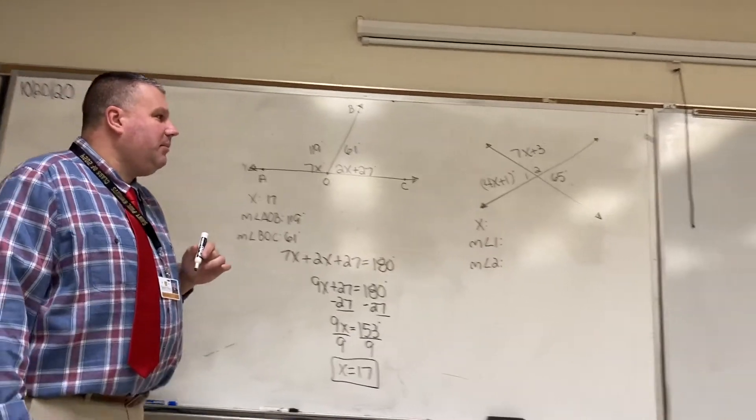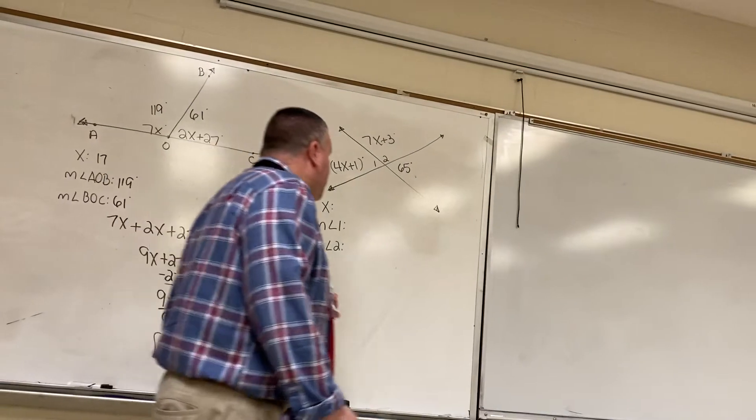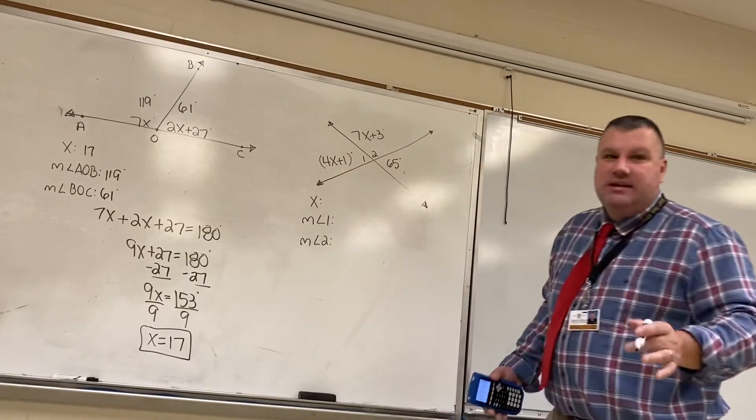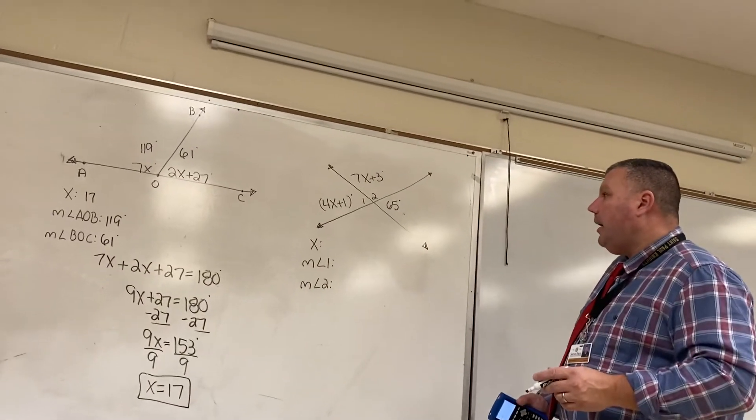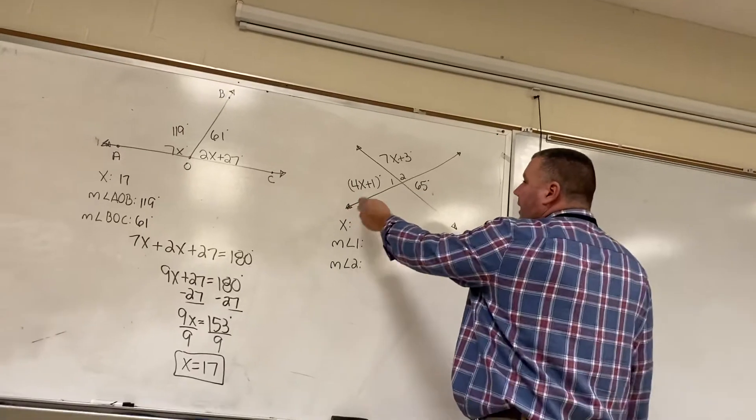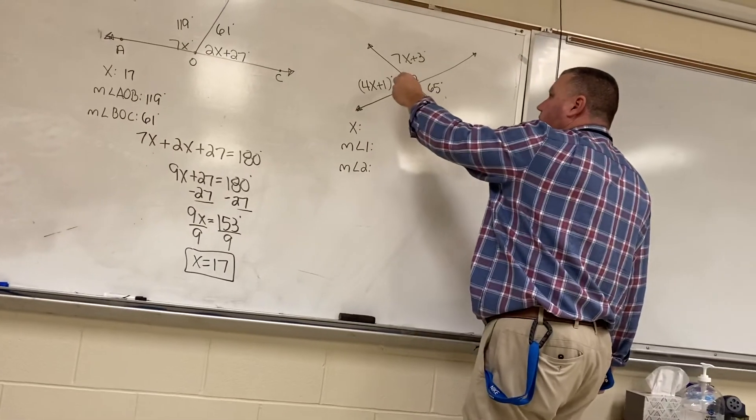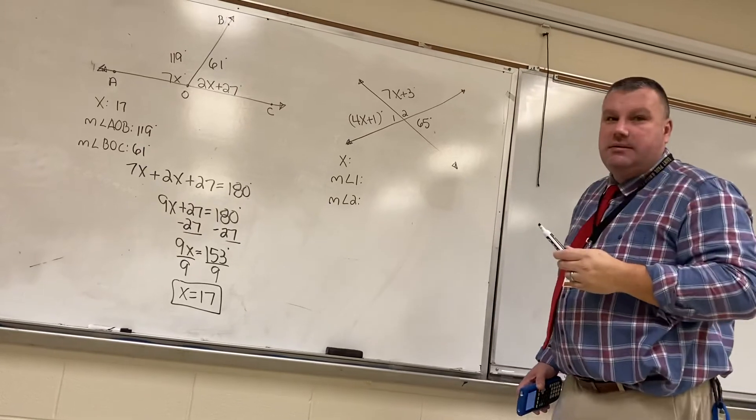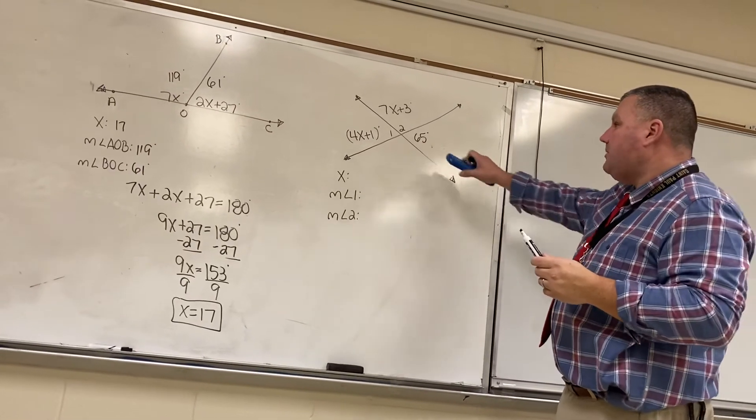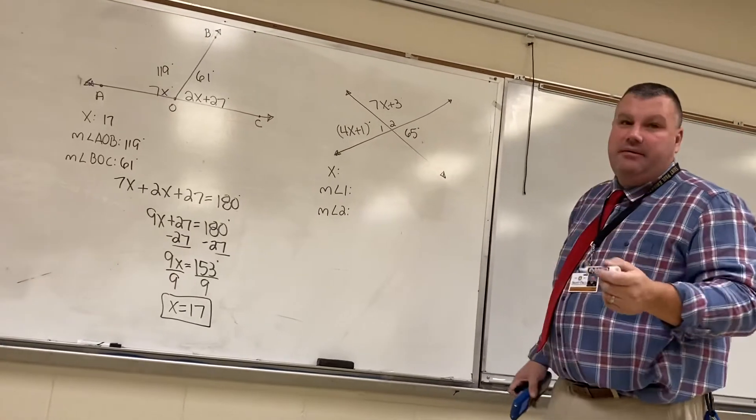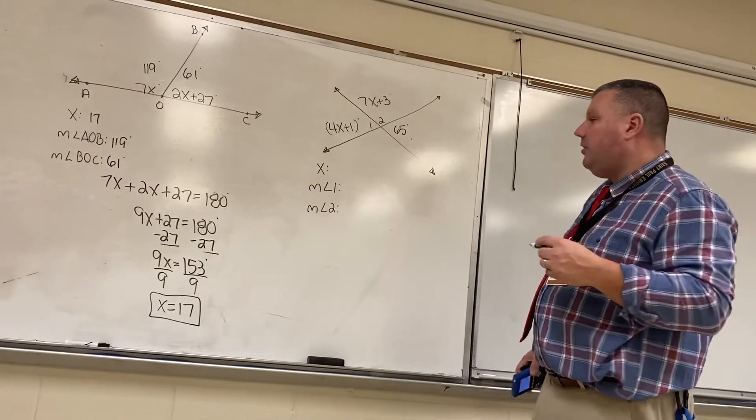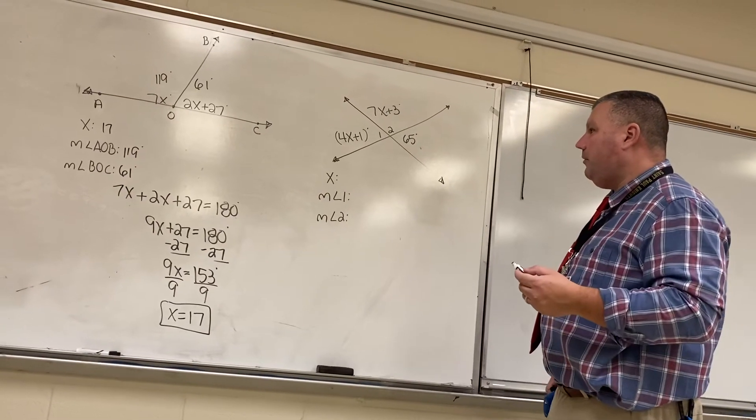Let's go over to the second problem. Now, a couple of different things here that you can solve to make this easy. You could go through and add the 4x plus 1 plus the 7x plus 3 and set that equal to 180 degrees. You could set the 4x plus 1 equal to 65 because those are vertical angles and those are congruent. So, that's the one that I'm going to go through and do.